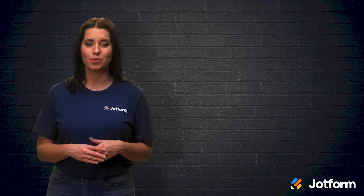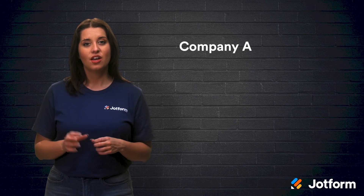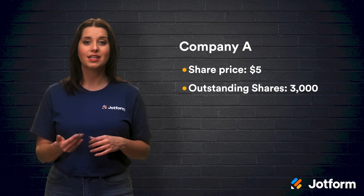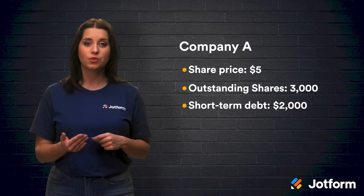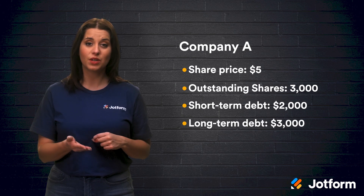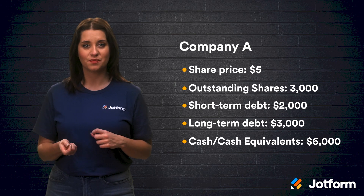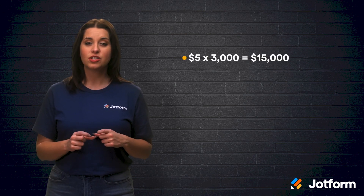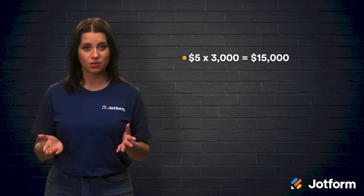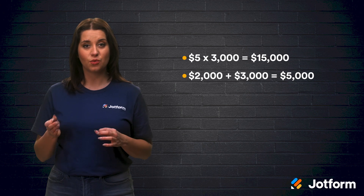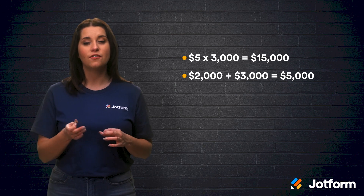Let's examine a few examples together. Look at Company A. Their current price of share is $5, the number of outstanding shares is 3,000, short-term debt is $2,000, long-term debt is $3,000, and their cash and cash equivalents is equal to $6,000. First, let's multiply the current price of the stock by the number of outstanding shares: $5 times 3,000 equals $15,000. For the net debt, you'd add together $2,000 and $3,000 to get a total of $5,000.